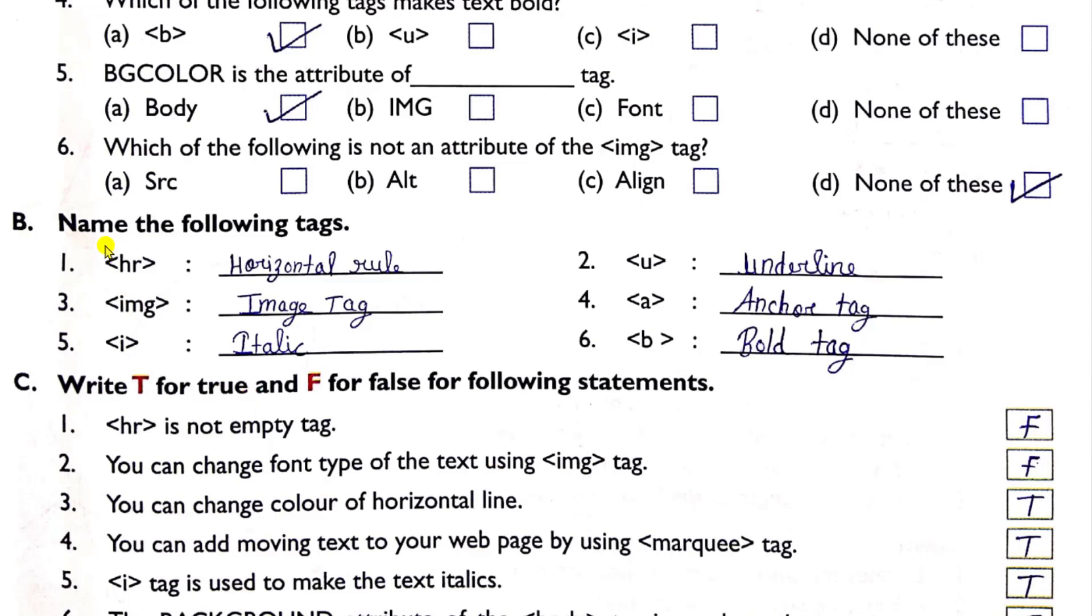Second question is name the following tags. You have to identify these tags. So first one is HR tag means horizontal rule tag. Second one is U, underline tag. Third, IMG, image tag. Fourth, A, anchor tag. Fifth, I, italic tag. And last B, bold tag.